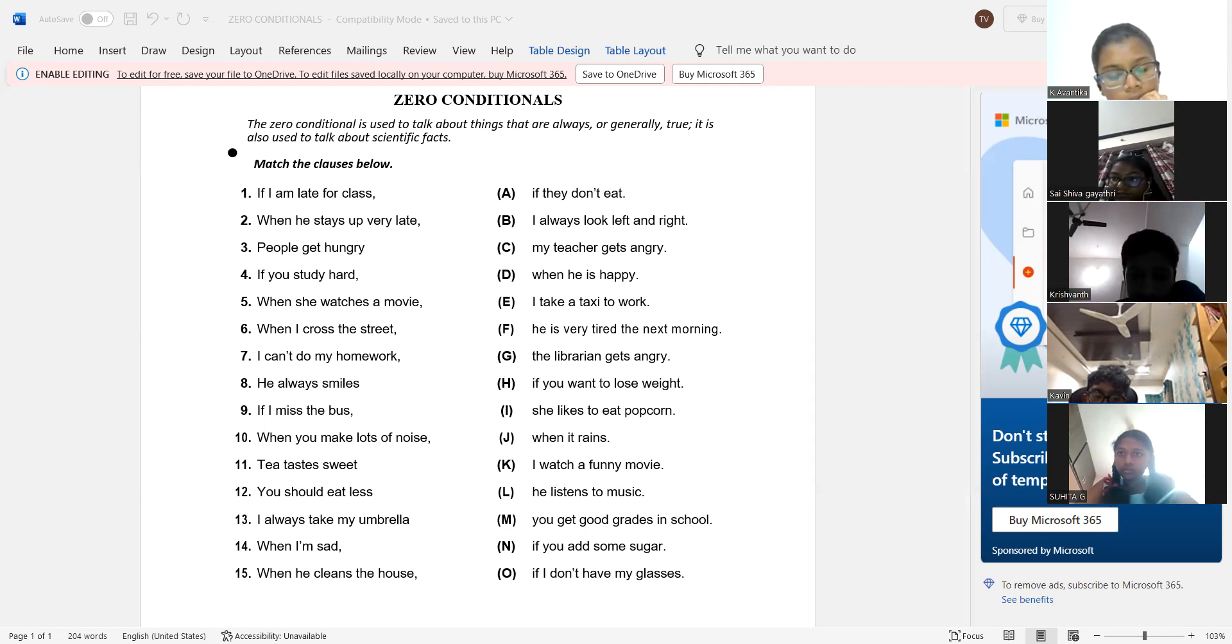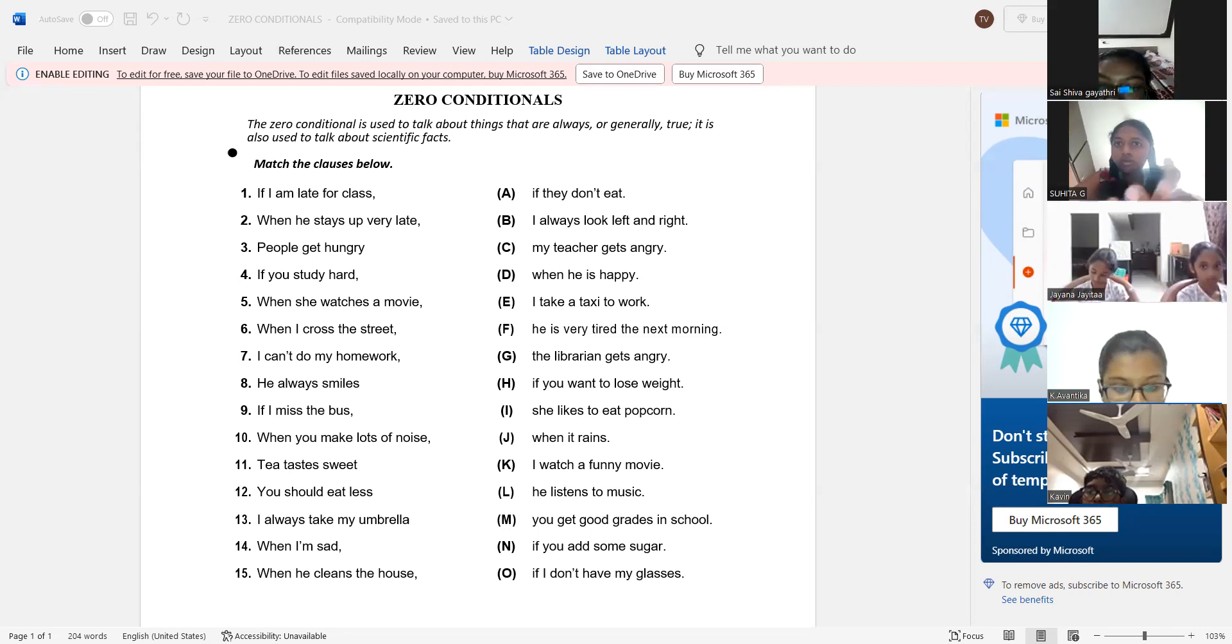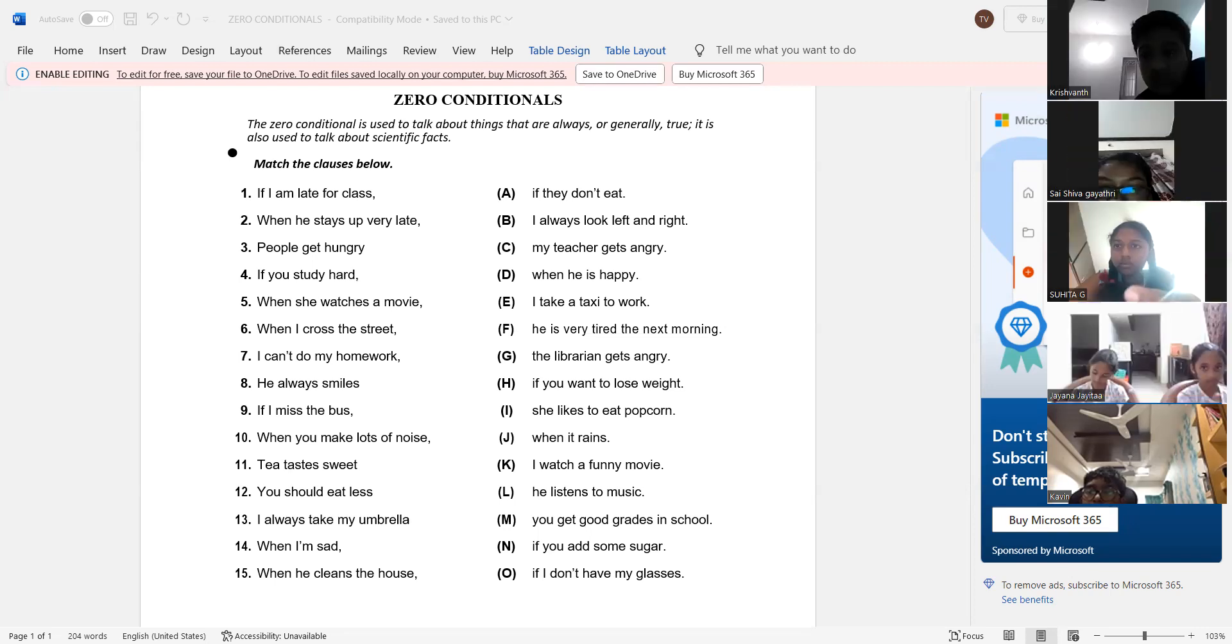13. Sugita, 13. Sir, I always take my umbrella when it rains. Super, super. Saishwagathri, you did it well last time. I think you are right and I mistook it. Saishwagathri, again, 14. Yes, sir. When I am sad, I watch a funny movie. There you go. Super. Super. That's a tricky thing. Very good. Very good.